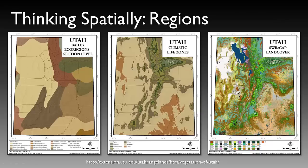An idea of some regions — just thinking in regional terms — here are a couple of different maps showing ecoregions that describe vegetation and land cover types. We have climatic life zones, and the far right there is the southwest regional GAP land cover, which identifies different land cover types. So these are different types of regions. Generally, these regions are broad assessments of what's going on on the ground.